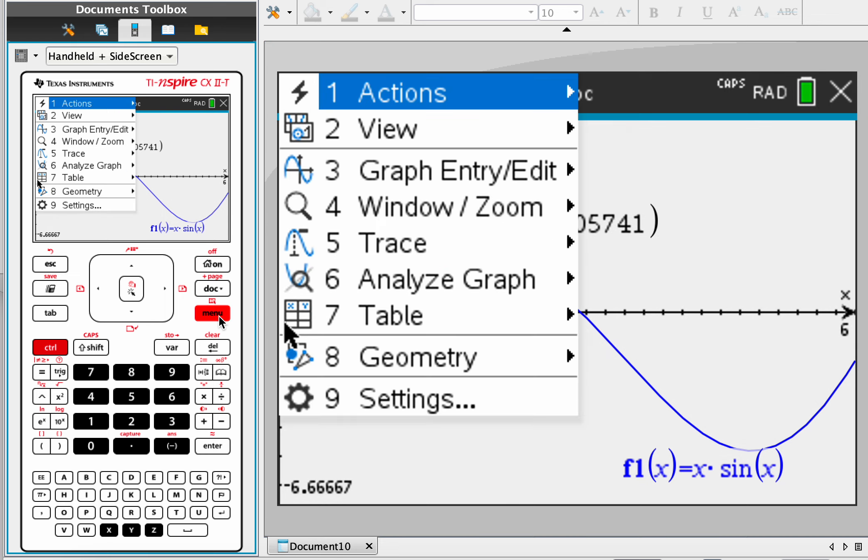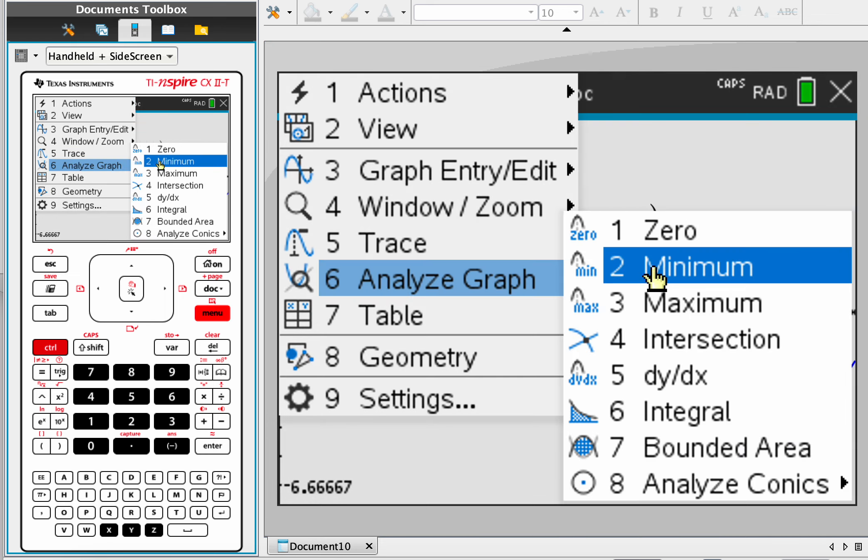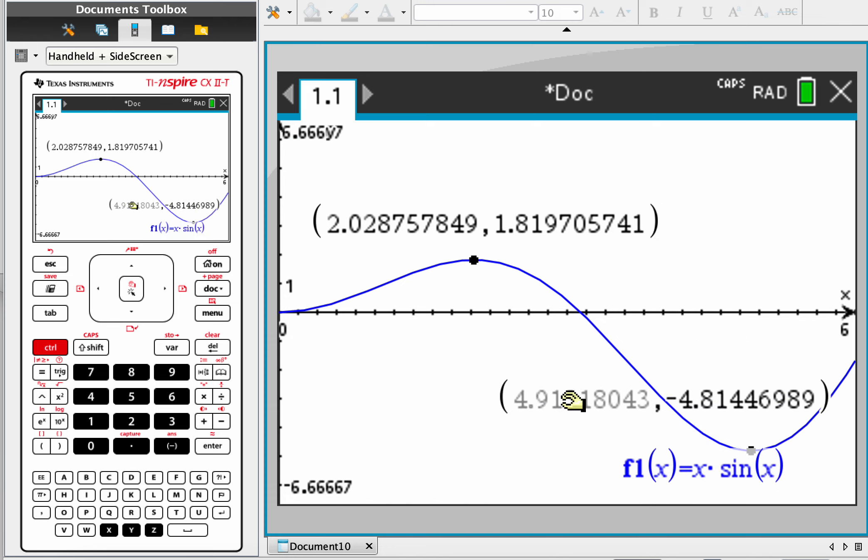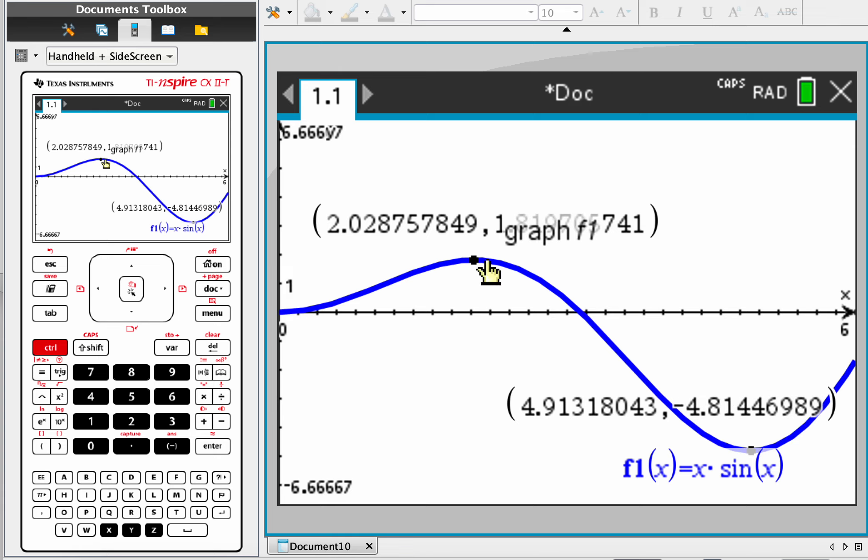Okay, and let's find the minimum. Analyze minimum from here to here. And that's about negative 4.81. Okay, so the range is from negative 4.81 all the way up to 1.82. Okay, the domain, which it's not asking for, is zero to six, but that was given in the question. Okay, so look at the y values there.